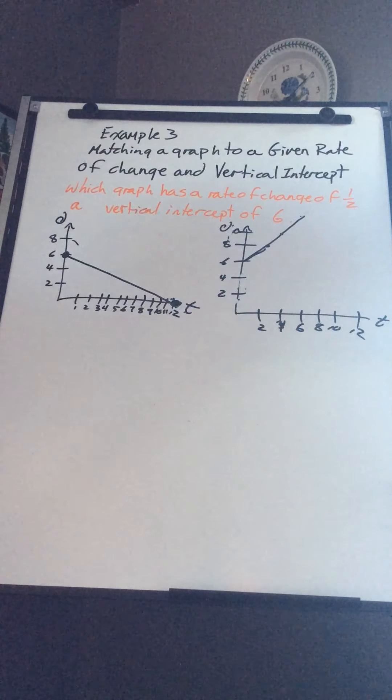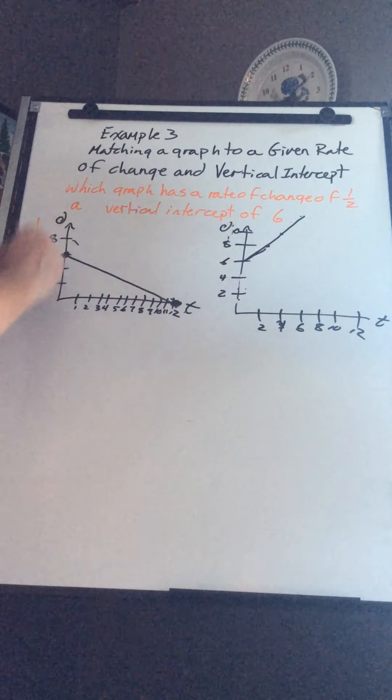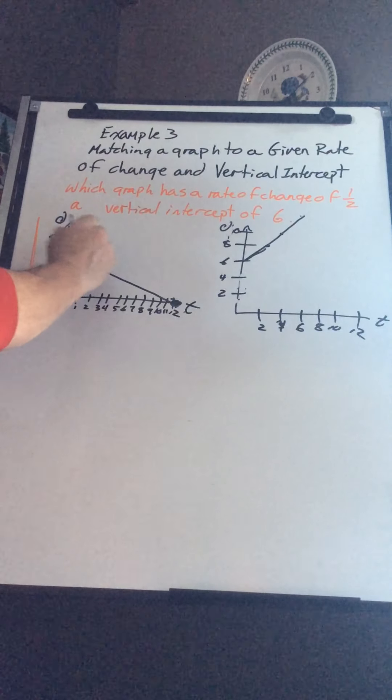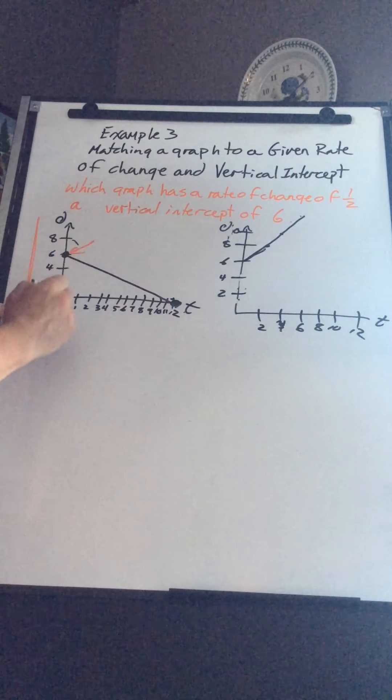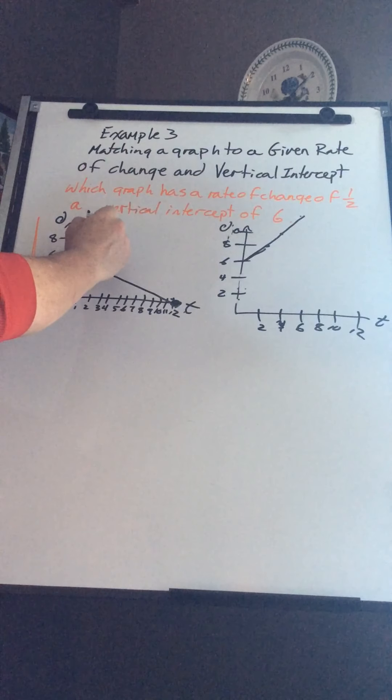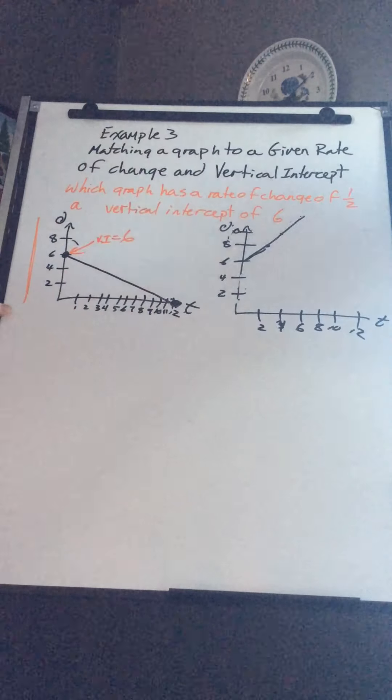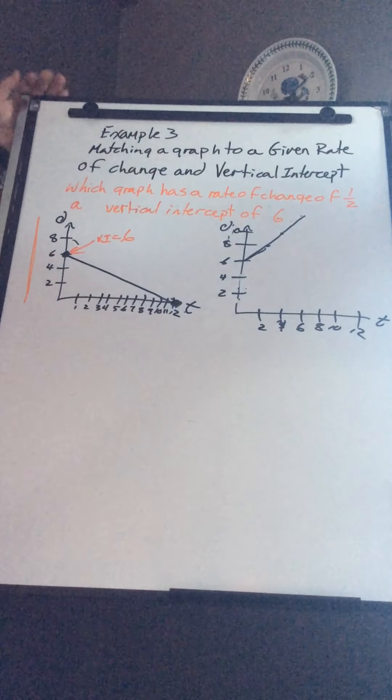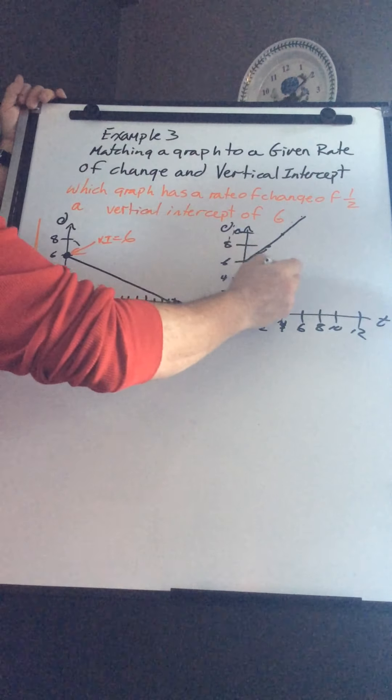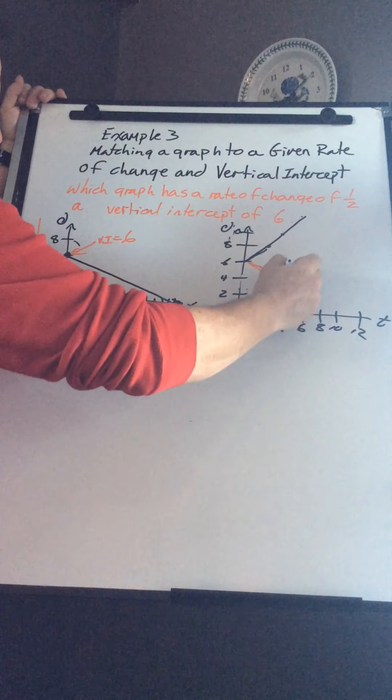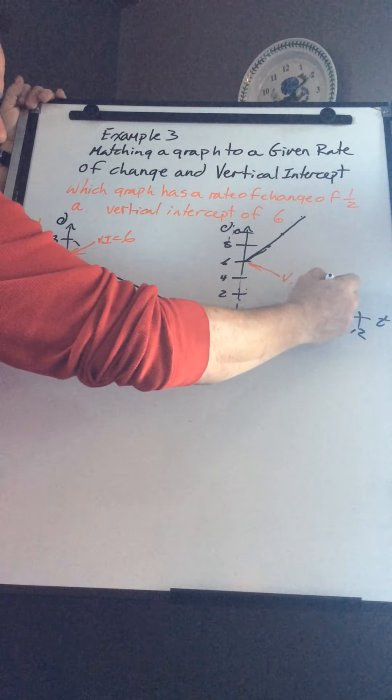First thing we get a look at is, remember this is vertical, so there's my vertical intercept because there's my vertical axis. So my vertical intercept for this is six. But it is for this graph too. My vertical intercept is six.